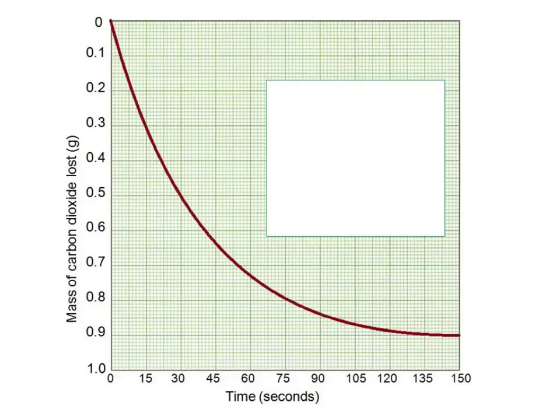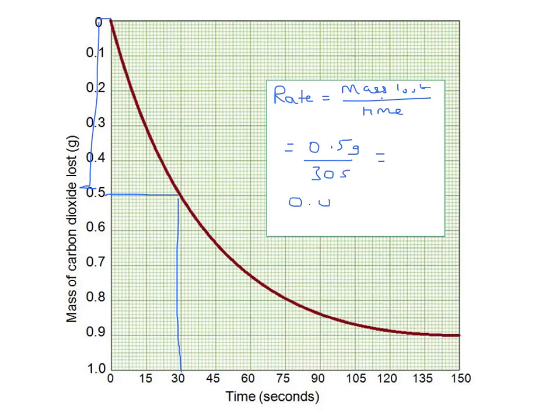Again, measuring the rate of the reaction over the first 30 seconds, we would draw up from 30 seconds and across to 0.5, so we can see that we've lost 0.5 grams in 30 seconds. So the rate here would be the mass lost divided by the time, and here it would be 0.5 grams per 30 seconds, and that would equal 0.0167 grams per second.